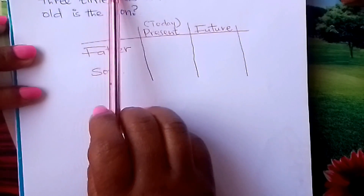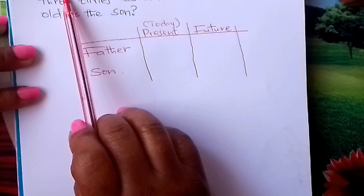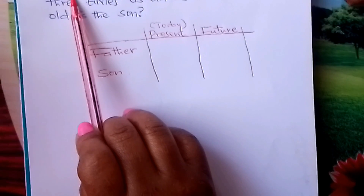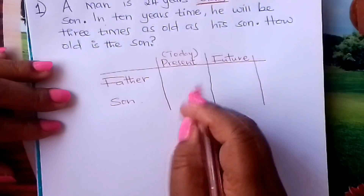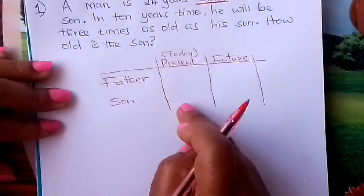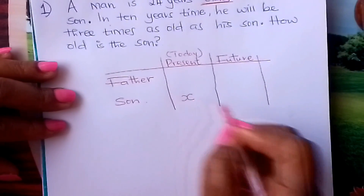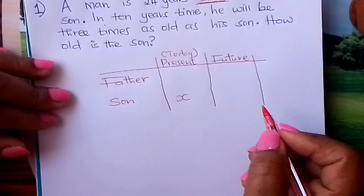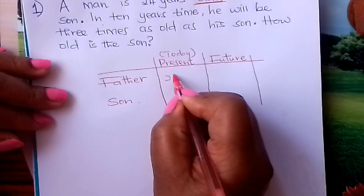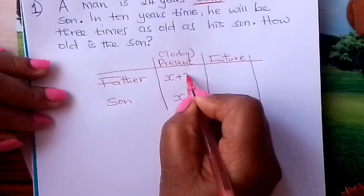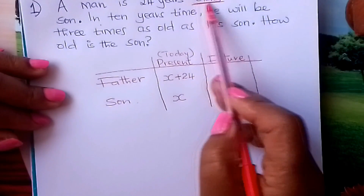We are told that a man is 24 years older than his son today. So in the present column, if the son is X years today, the father will be the son's age plus 24. I hope you get that because of the term 'older.'